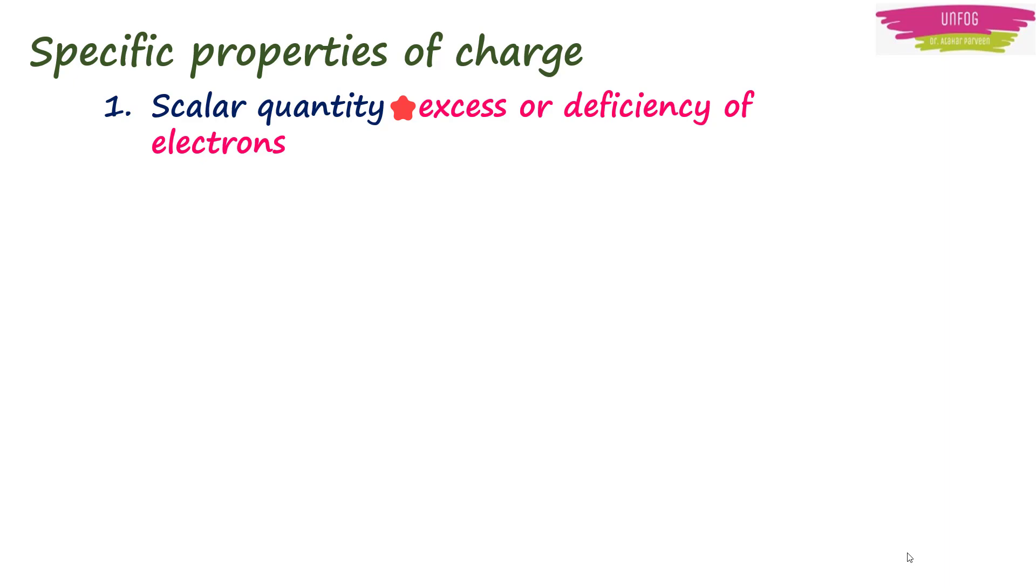Charge is a scalar quantity, that is, it has only magnitude and no direction. It can be defined as excess or deficiency of electrons as compared to number of protons. Excess of electrons means that the body is negatively charged, and deficiency of electrons means that the body is positively charged.